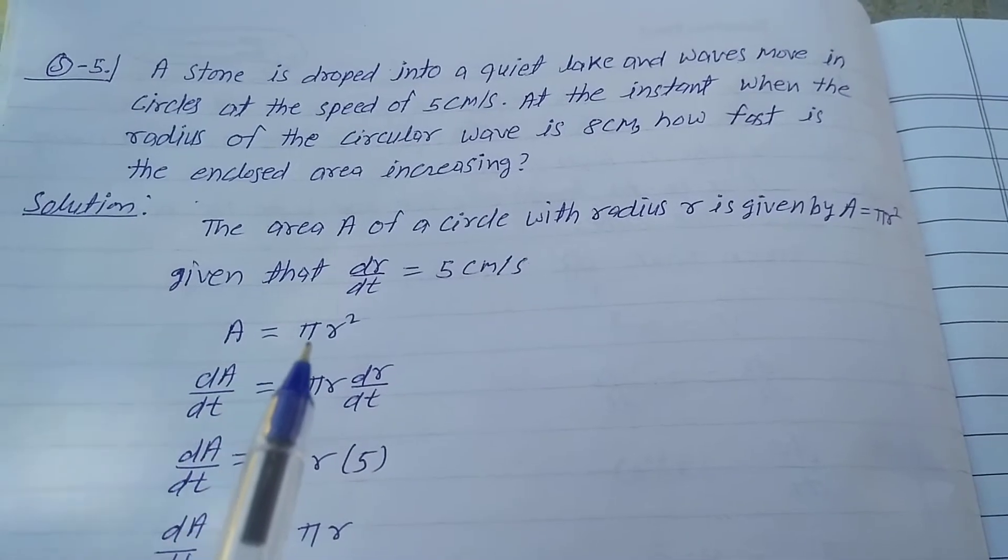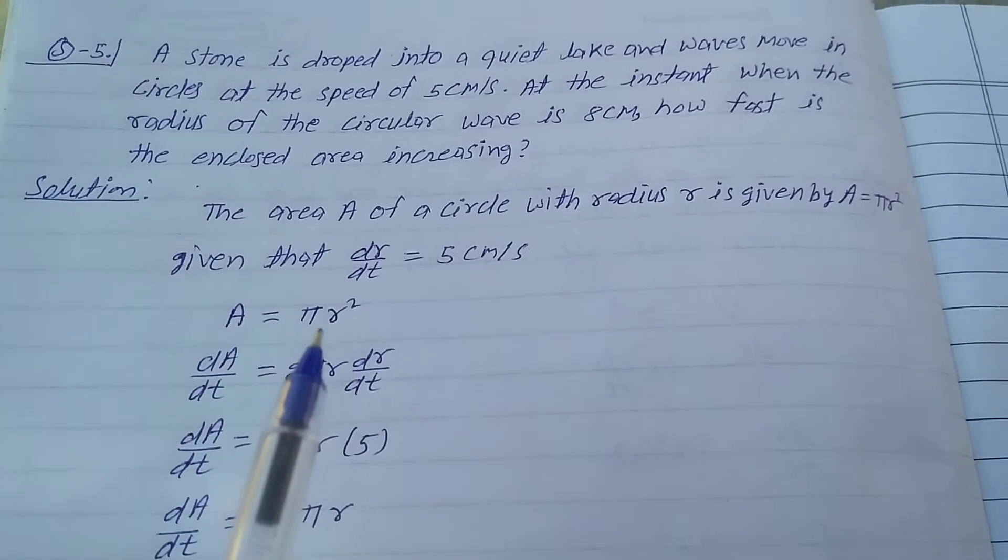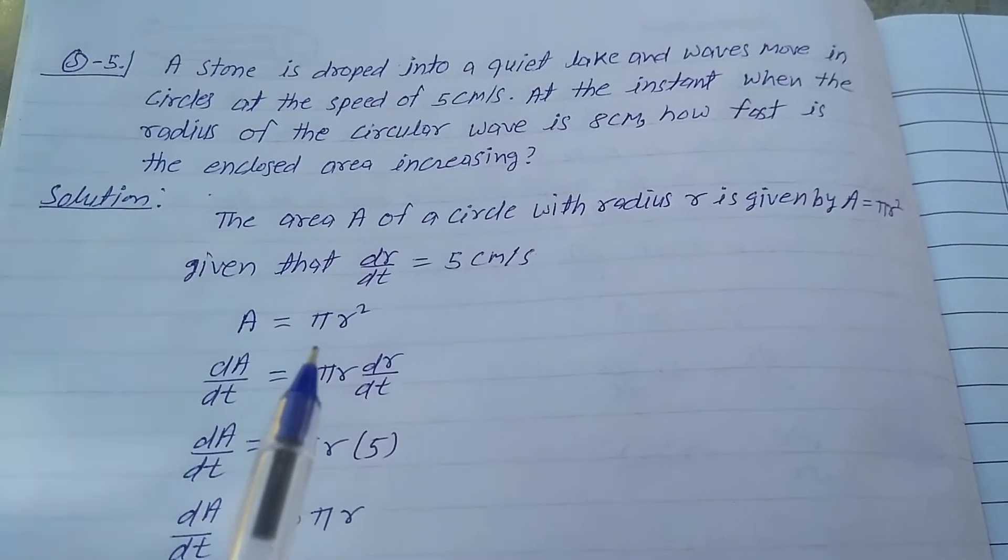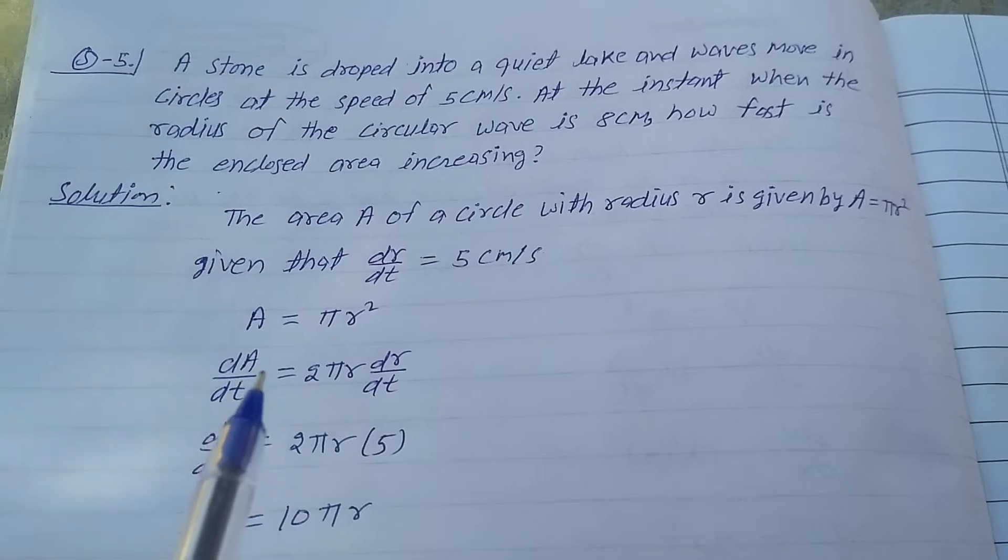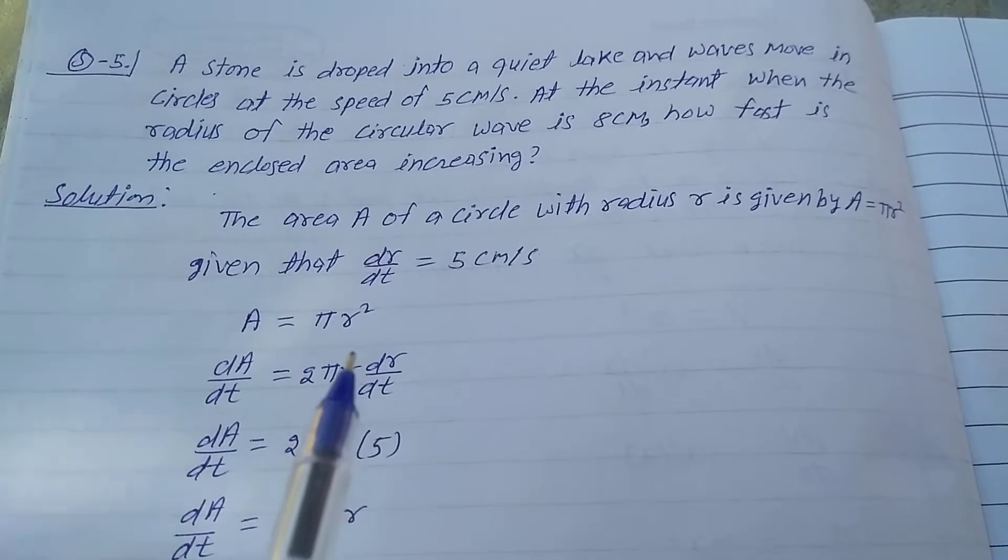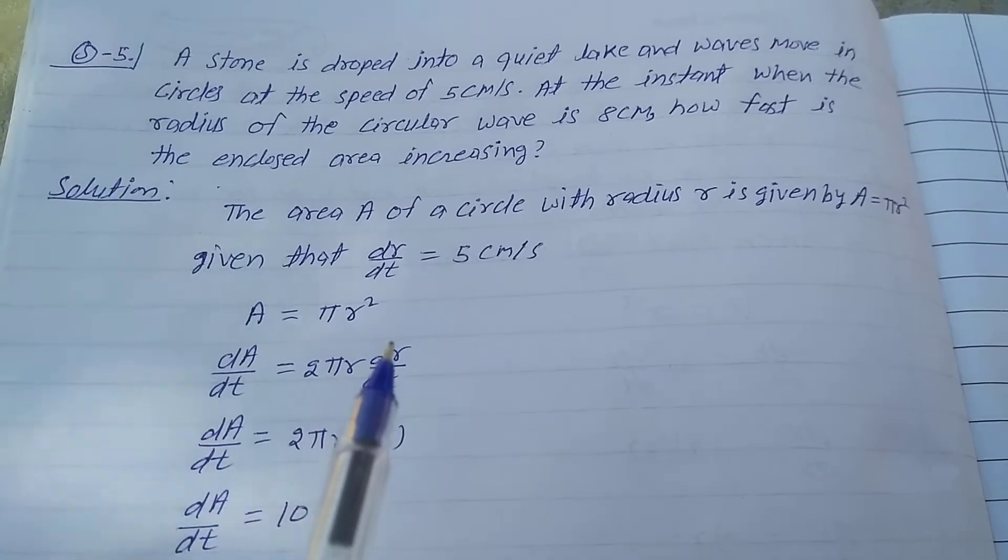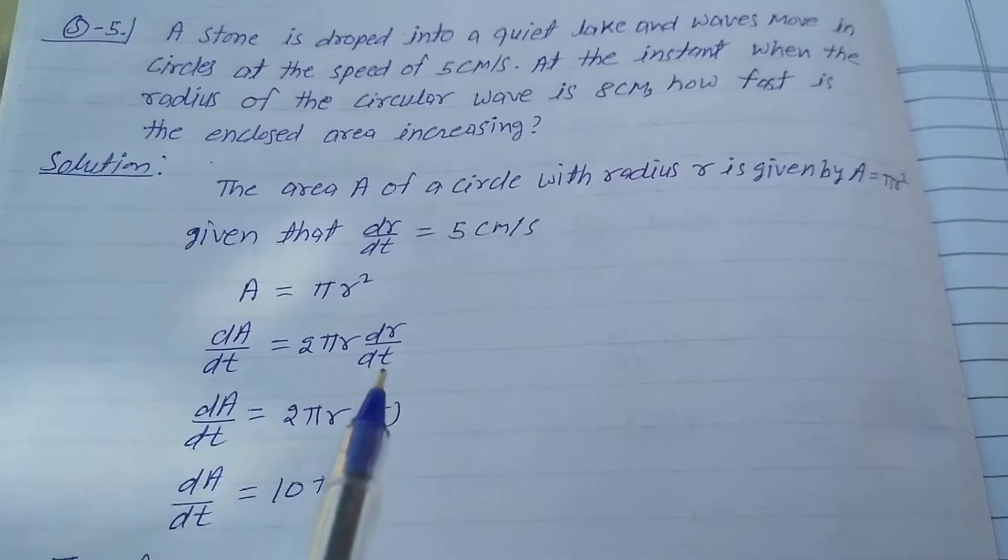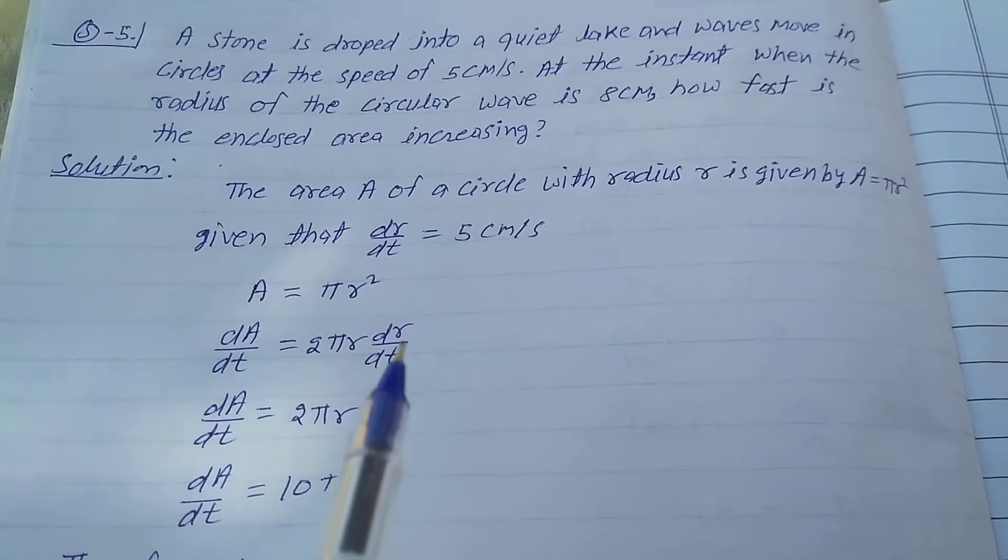The area of the circle is A equals π r squared. To find dA/dt, differentiate with respect to t. So dA/dt equals π times the derivative of r squared with respect to t, which is 2πr dr/dt. In the question, dr/dt is given, so put the value here.